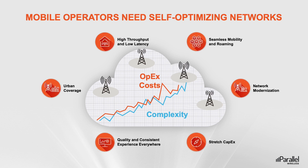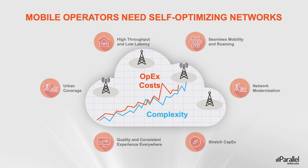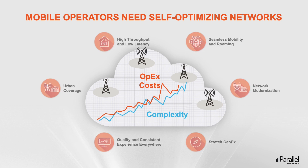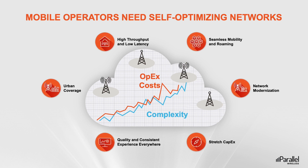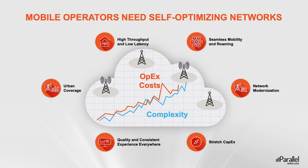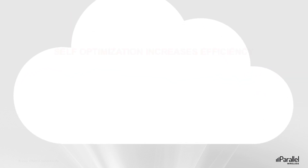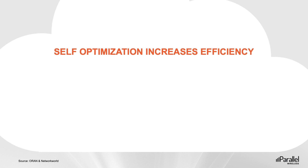Network densification will be a critical part of deploying 5G architectures, especially to achieve the promise of increased data rates and ultra reliable lower latency performance. 5G networks are predicted to be as much as 10 times denser than 4G networks, which is equivalent to a hundred times increase over 3G networks.